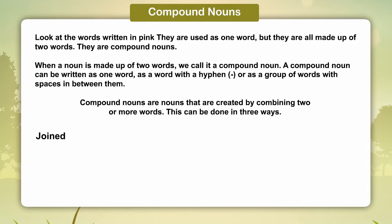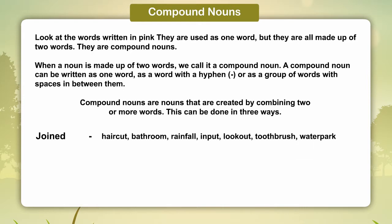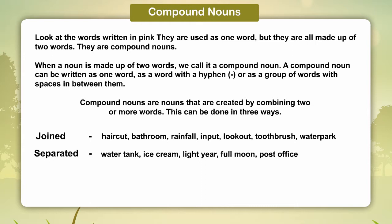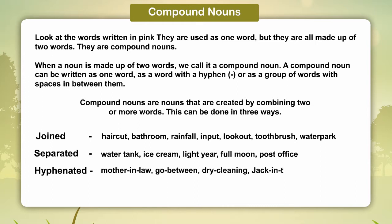Compound nouns are nouns created by combining two or more words. This can be done in three ways. Joined: haircut, bathroom, rainfall, input, lookout, toothbrush, waterpark. Separated: water tank, ice cream, light air, full moon, post office. Hyphenated: mother-in-law, go-between, dry cleaning, jack-in-the-box.